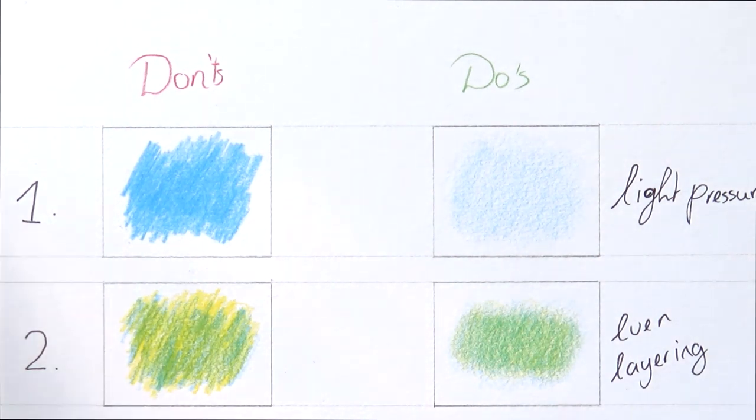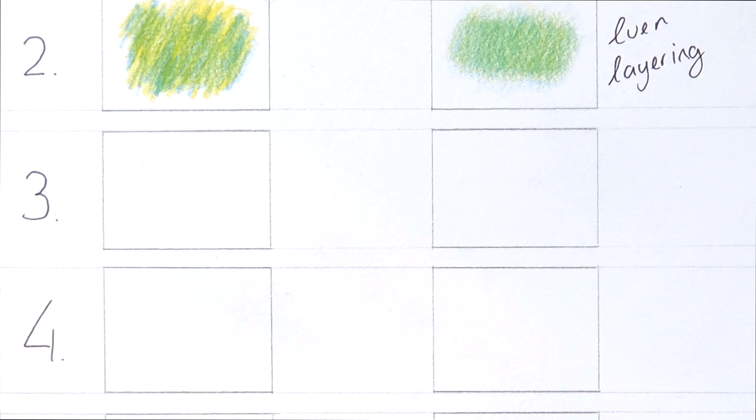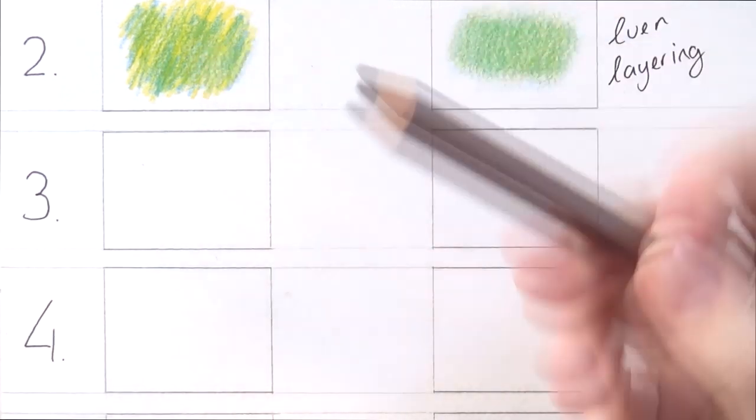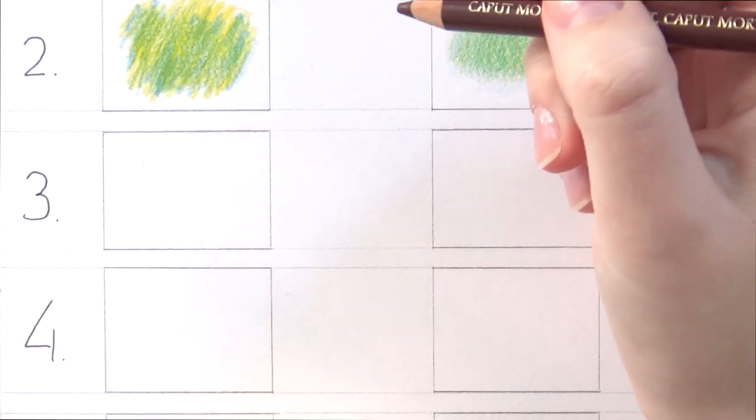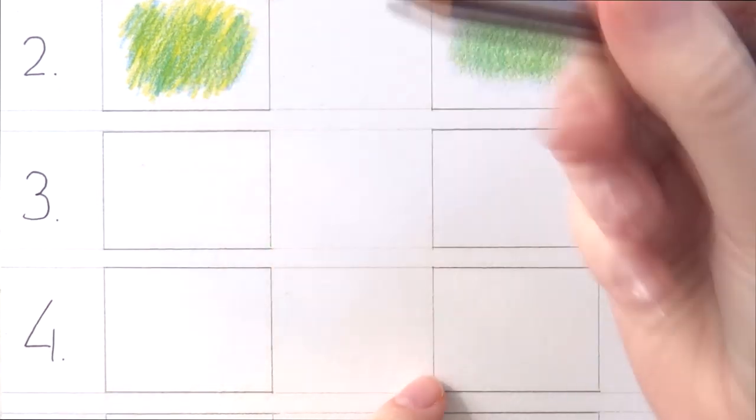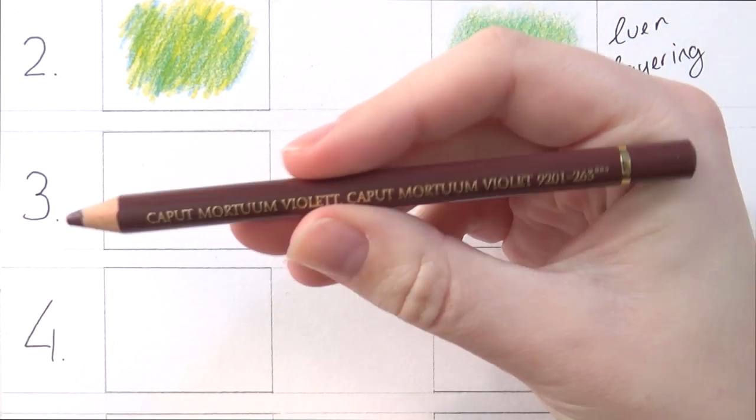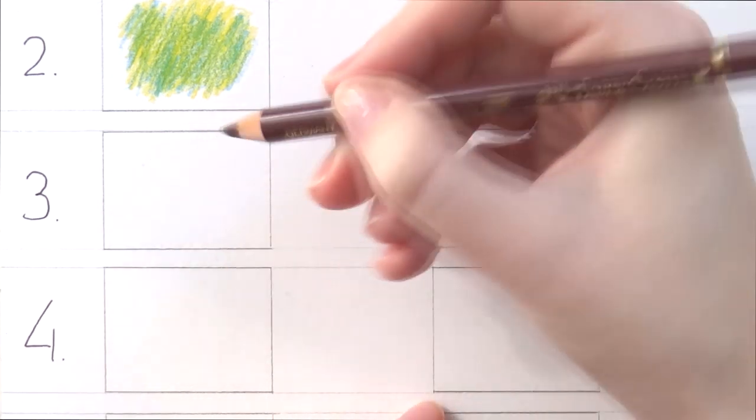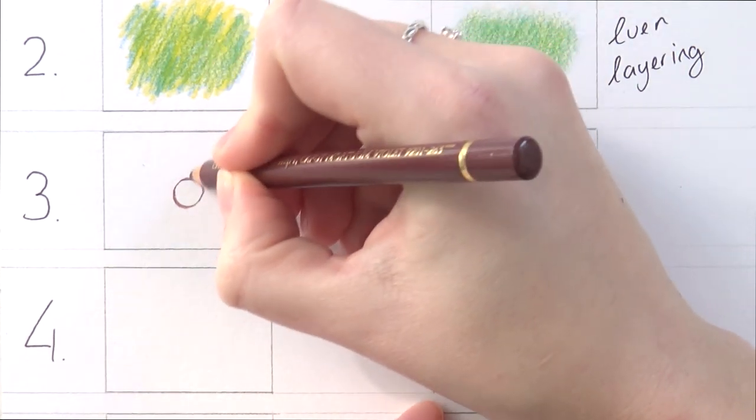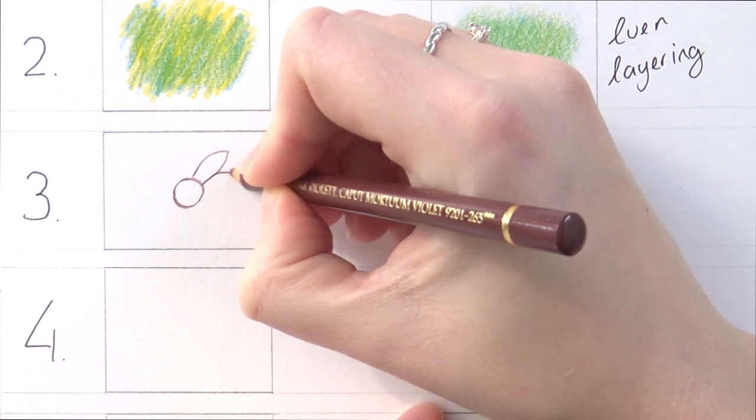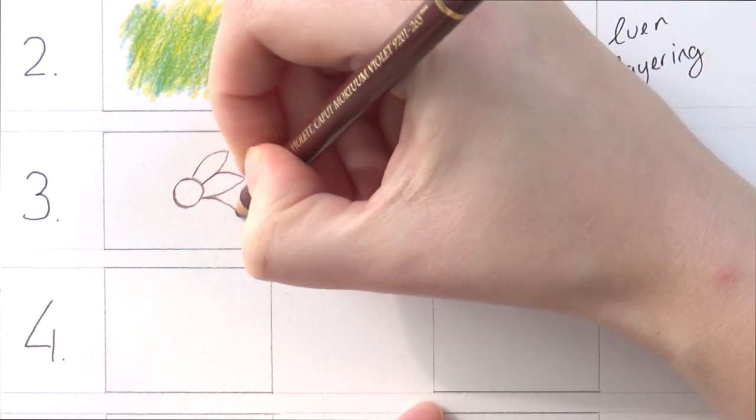Alright, let's move the paper down for the third one. So number three is also a very important one in realistic drawing which is using a sharp point. The don't would be using a dull point to add details. So let's say I want to draw a flower. I'm going to draw a very childish looking flower. But just to demonstrate this is Caput Mortuum Violet 263. I'm just going to demonstrate. So I'm drawing a flower and I want it to be very nice and detailed.